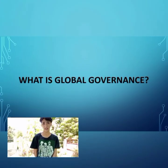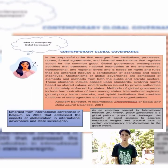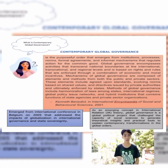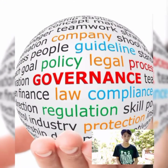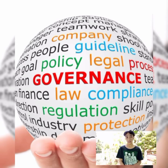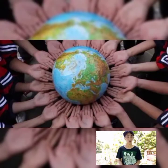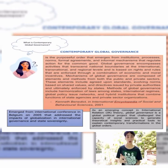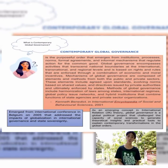What is contemporary global governance? According to Kenneth Benedict in the Encyclopedia of Social and Behavioral Sciences, contemporary global governance is defined as a purposeful order that emanates from various institutions, processes, formal agreements, and informal mechanisms that regulate actions for the common good. It is based on rights and rules that are enforced through a combination of both economic and moral incentives. This mechanism is not exclusive to the public sector but also to the private one, which is why we have many private and international organizations that play an important role in global governance.